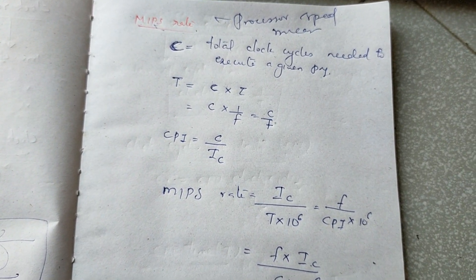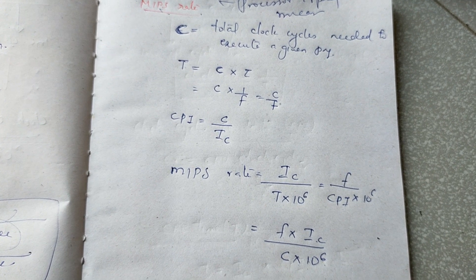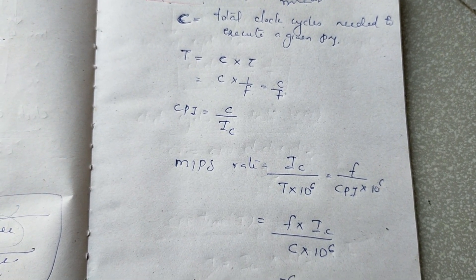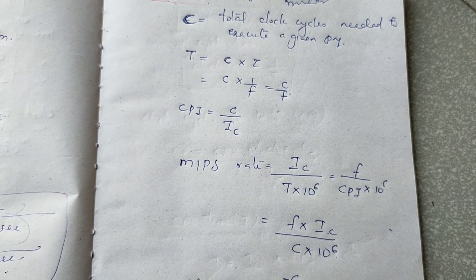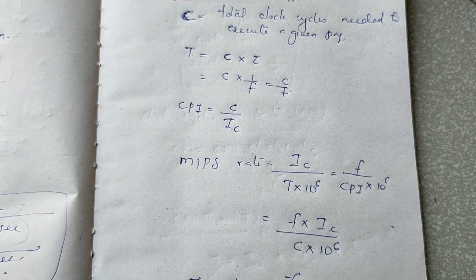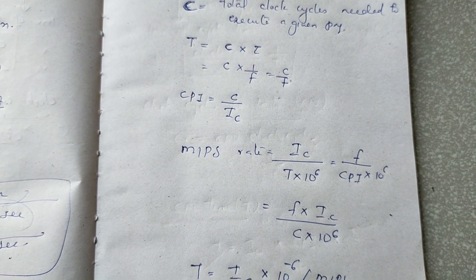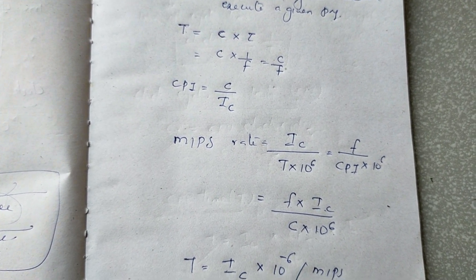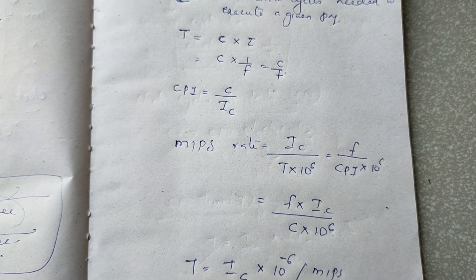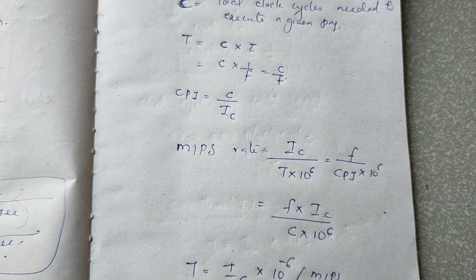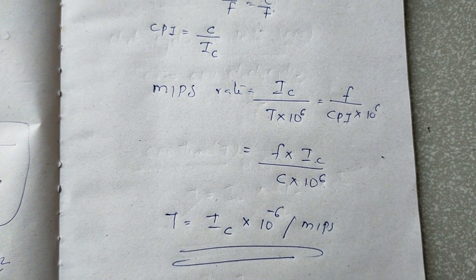To summarize: performance is related to response time and throughput. We calculate execution time as the inverse of performance. Key parameters include clock cycle, clock rate, CPI, and MIPS rate.